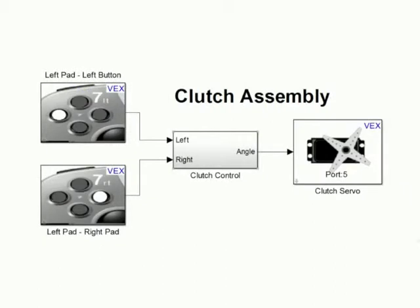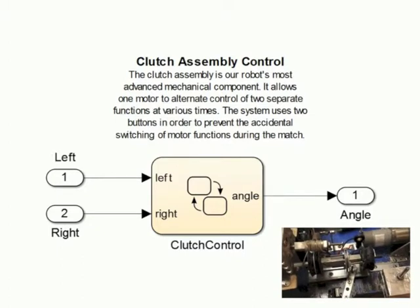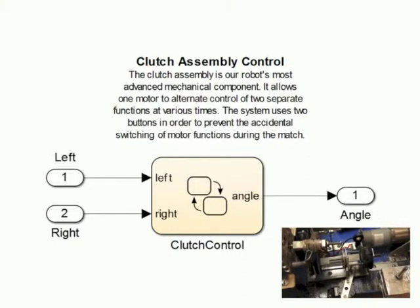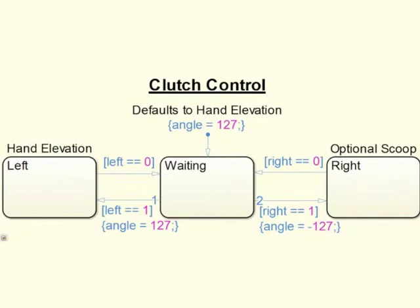Reaper's clutch mechanism uses an unprecedented servo switch to allow one motor to control either of two separate functions on the robot. The control scheme purposefully separates the switch's two settings so that the driver can know with certainty that they're controlling the correct function during the match. The clutch system's logic is actually quite simple. The left button sets the clutch to its left setting and the right button activates the right setting.